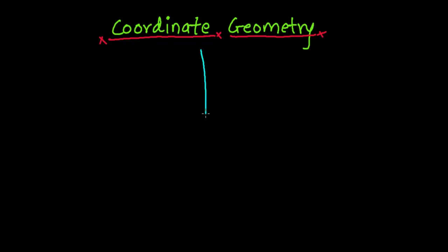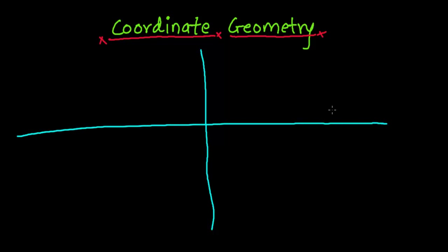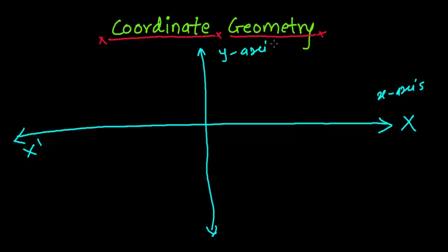Let me draw the two perpendicular lines. This vertical line and this horizontal line — the horizontal line is known as the x-axis, represented as x and x-dash. The vertical line is known as the y-axis, represented as y and y-dash. The intersecting point of these two lines is known as the origin, or zero.